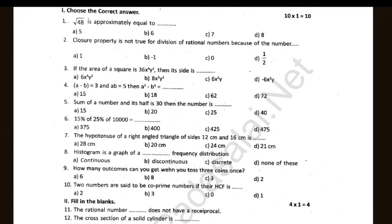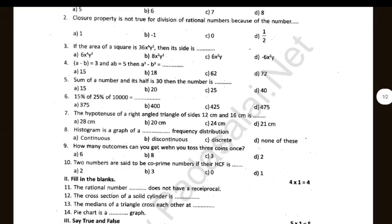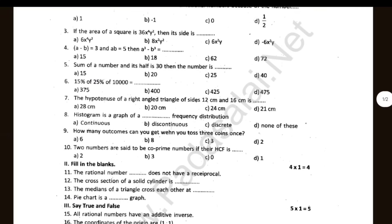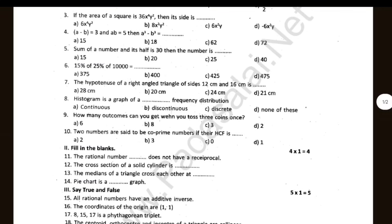If the area of a square is 36x⁴y² then its side is dash. A minus B is equal to 3 and AB is equal to 5, then A cube minus B cube is equal to dash. The sum of a number and its half is 30, then the number is dash.